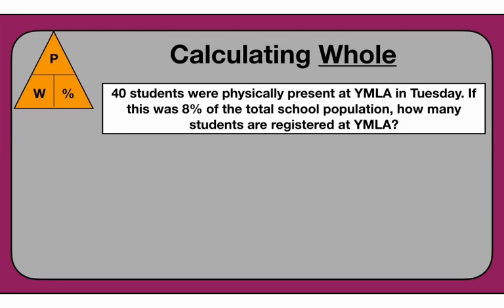Let's try this last one for the triangle — calculating the whole value. This one can be the trickiest. 40 students were physically present at YMLA on Tuesday. If this was 8% of the total school population, how many students are registered at YMLA? So we're solving for the whole. It says 40 students — just a part of the total — were present. That's the part. And 8% is the percent.